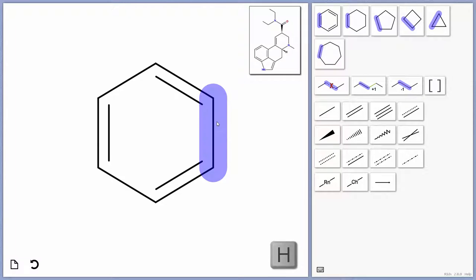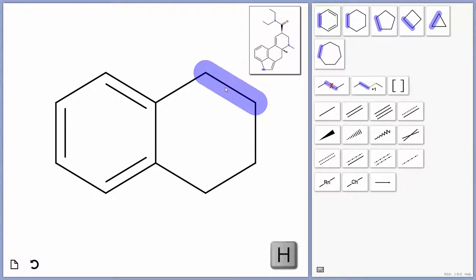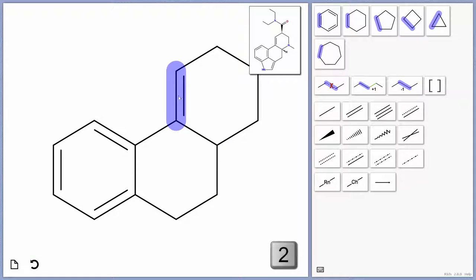Then I'm going to select the bond and apply a cyclohexane, another cyclohexane, and then insert the double bond. Note that some keyboard shortcuts change depending on the location selected. So with a bond selected, 2 adds a double bond, 3 adds a triple bond.